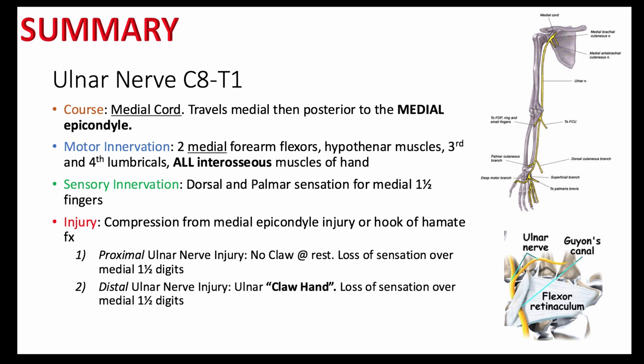So let's sum it up. The ulnar nerve innervates the two medial flexors of the forearm. All the other stuff is the median nerve, and the sensation for the medial one and a half digits on both sides of the hand. The ulnar nerve innervates all the interosseous muscles of the hands. So problems abducting or adducting the second to fifth digits is an ulnar nerve issue. Like we saw with median nerve injuries, distal damage to the ulnar nerve results in a claw hand at rest.